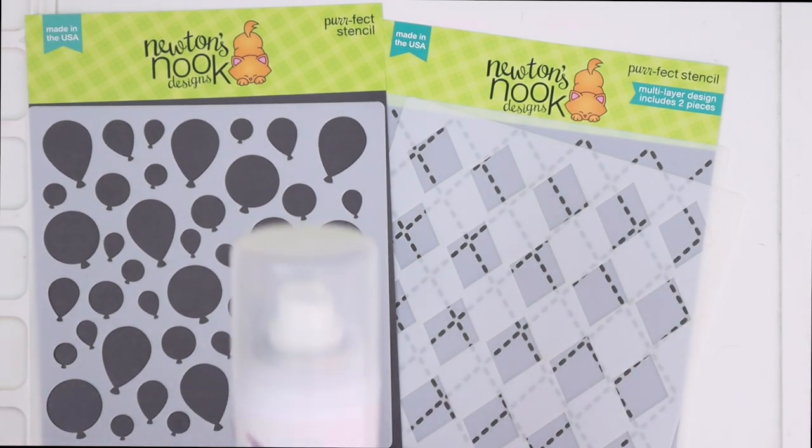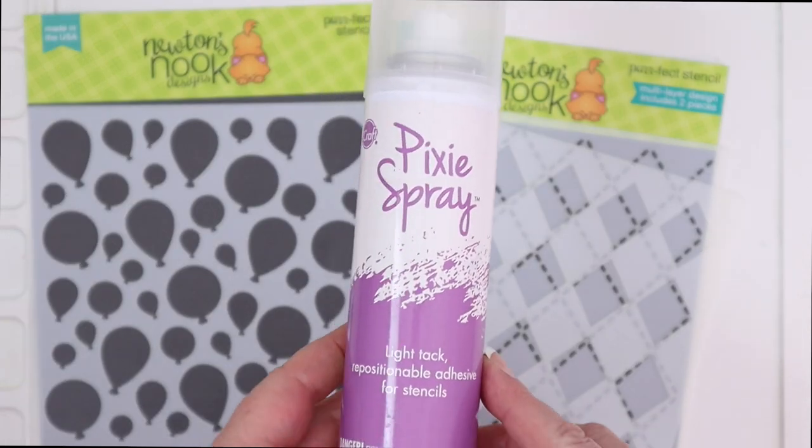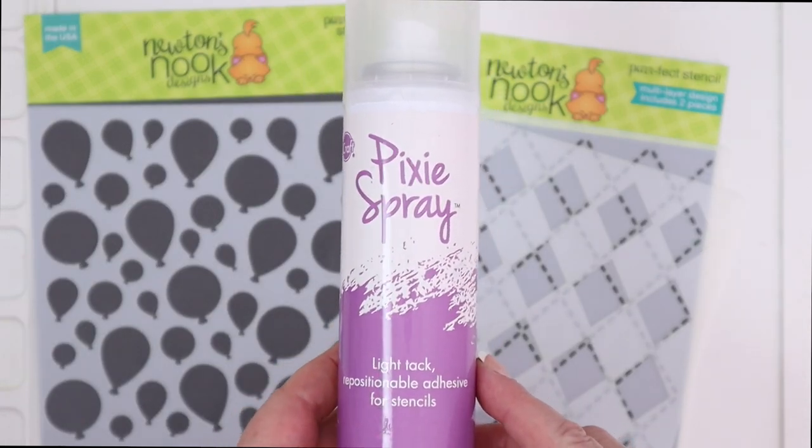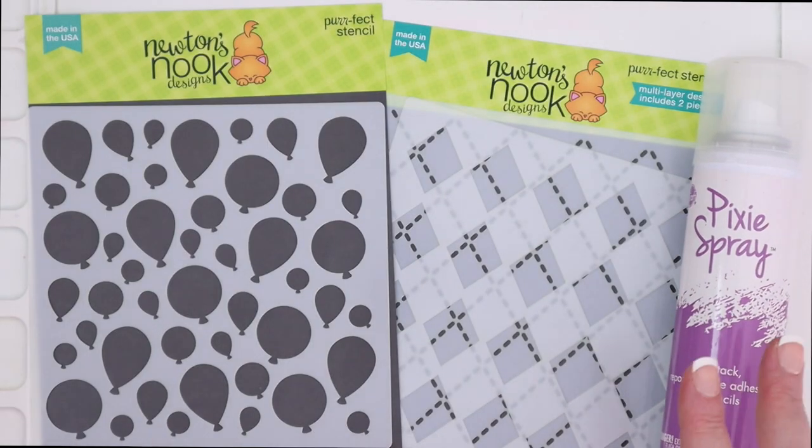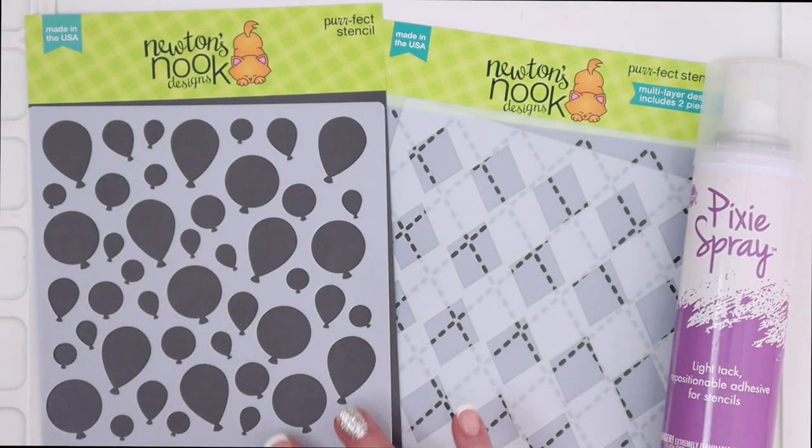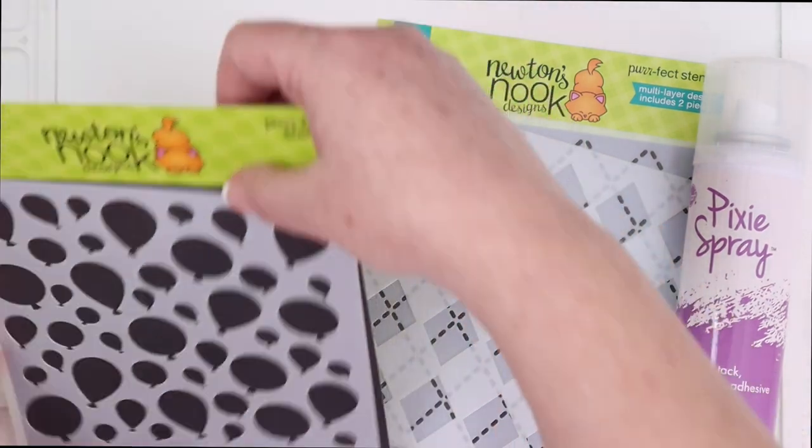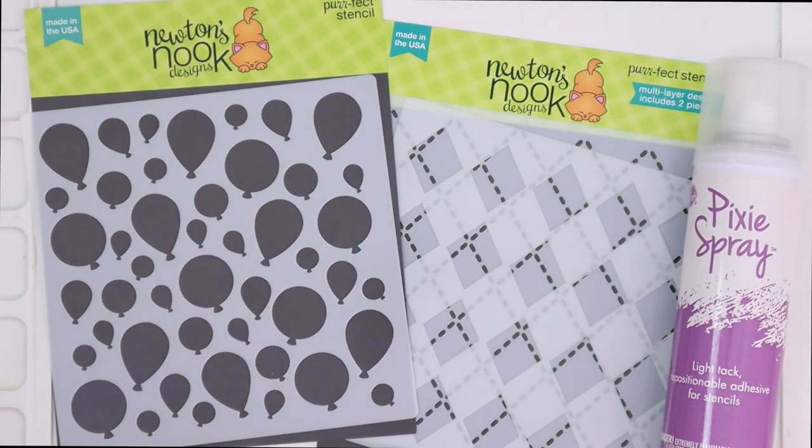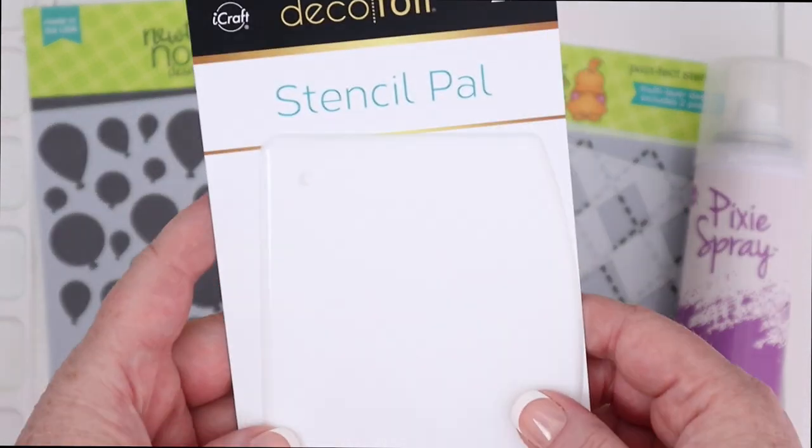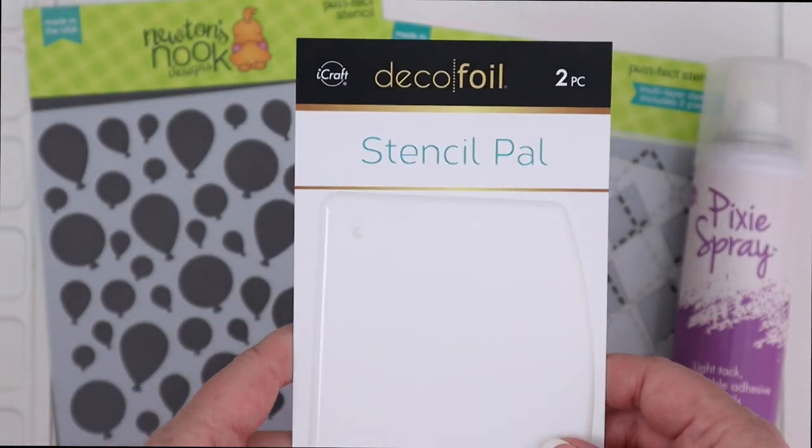So these are the two stencil sets that I'm going to be using today. I always use pixie spray when I'm working with stencils. It's a light tack repositionable adhesive and it makes stencils really easy. One of the stencils that we're going to be using today is a layered stencil and one is a single stencil, but I'm going to show you how to use both with ink and glitter glitz gel.